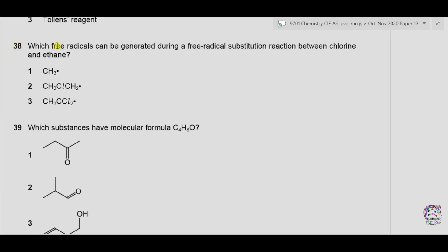Question 38. Which free radicals can be generated during a free radical substitution reaction between chlorine and ethane? Option 1 is the methyl radical. The methyl radical can be formed if the reactant is CH4 with chlorine in the presence of sunlight, but as we have ethane C2H6, it is not possible to make two methyl radicals from this, so option 1 is incorrect.